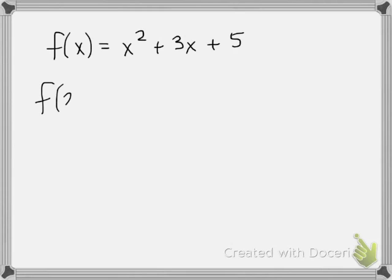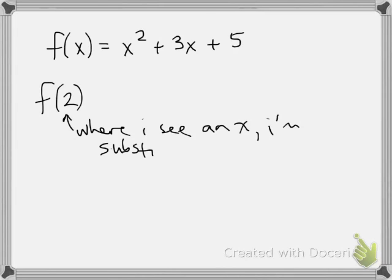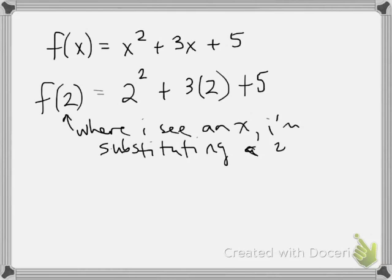So let's start out trying to find f of 2. What this is saying is where I see an x, I'm substituting a 2. So everywhere I see an x, I'm going to put a 2. So I have 2 squared plus 3 times 2 plus 5, and now I can compute this as 4 plus 6 plus 5, or 15.